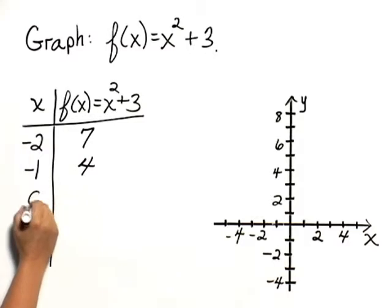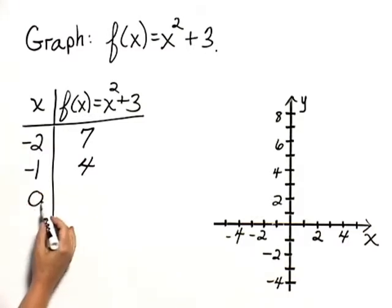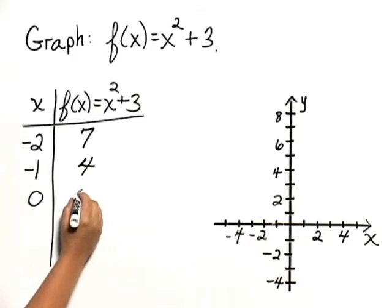Let's try x as 0. Then we have f of 0, which is 0 squared plus 3, or 3.